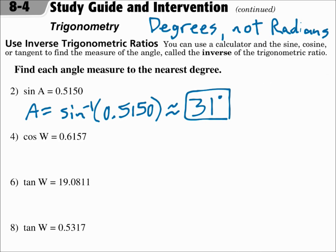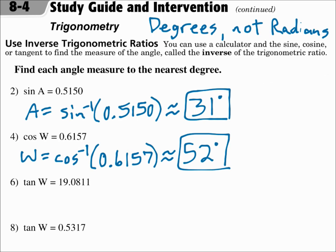Number 4: cosine W equals 0.6157. I need to do the opposite of cosine, which is arc cosine. So W equals cosine⁻¹ — hit second and the cosine button — of 0.6157, and that's approximately 52 degrees. Remember, when you're looking for the angle measure, do the inverse function: the arcsine, the arc cosine, or the arc tangent. The inverse gives you the angle measure.